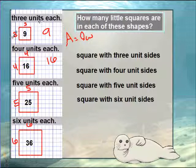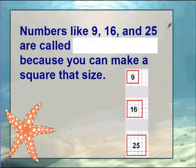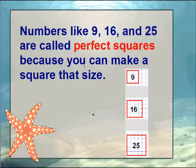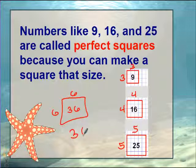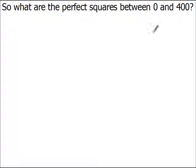So if you look at these numbers — 9, 16, 25 — there's a special name for these, and that special name is a perfect square. Whenever you have a square that has the same number on each side, the area, or the number of boxes inside, that answer is a perfect square. So 9, 16, 25, and 36 are all perfect squares.